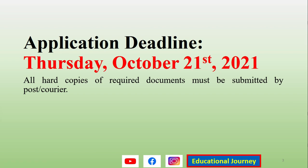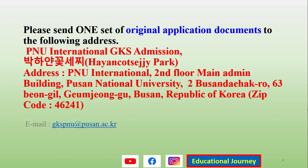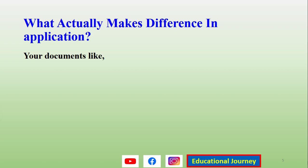You can print out Form 4, and your recommender needs to put the recommendation letter — one page — seal it, and sign it. The address is: PNU International GKS Admission, Second Floor, Main Admin Building, Busan National University, 2 Busandaehak-ro 63beon-gil, Geumjeong-gu, Busan, Republic of Korea. Zip code: 46241. For any difficulty, contact gks.pnu@pusan.ac.kr and they will answer within one working day.